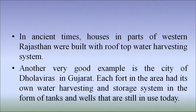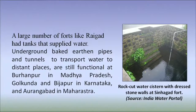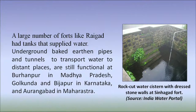In ancient times, houses in parts of western Rajasthan were built with rooftop water harvesting systems. Another very good example is the city of Dholavira in Gujarat. Each fort in the area had its own water harvesting and storage system in the forms of tanks and wells, and they are still being used today. A large number of forts in Raigarh had tanks that supplied water. Underground baked earthen pipes and tunnels to transport water to distant places are still functional at Burhanpur in Madhya Pradesh, Golconda and Bijapur in Karnataka, and Aurangabad in Maharashtra. In this figure you can see that in a fort, cut-out water systems with dressed stone walls are used to store water.